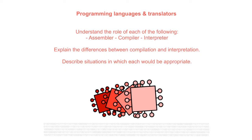In this video we are going to make sure you understand the role of each of the following types of translators: assemblers, compilers, and interpreters. We'll explain the difference between compilation and interpretation and we'll describe situations in which both would be appropriate.